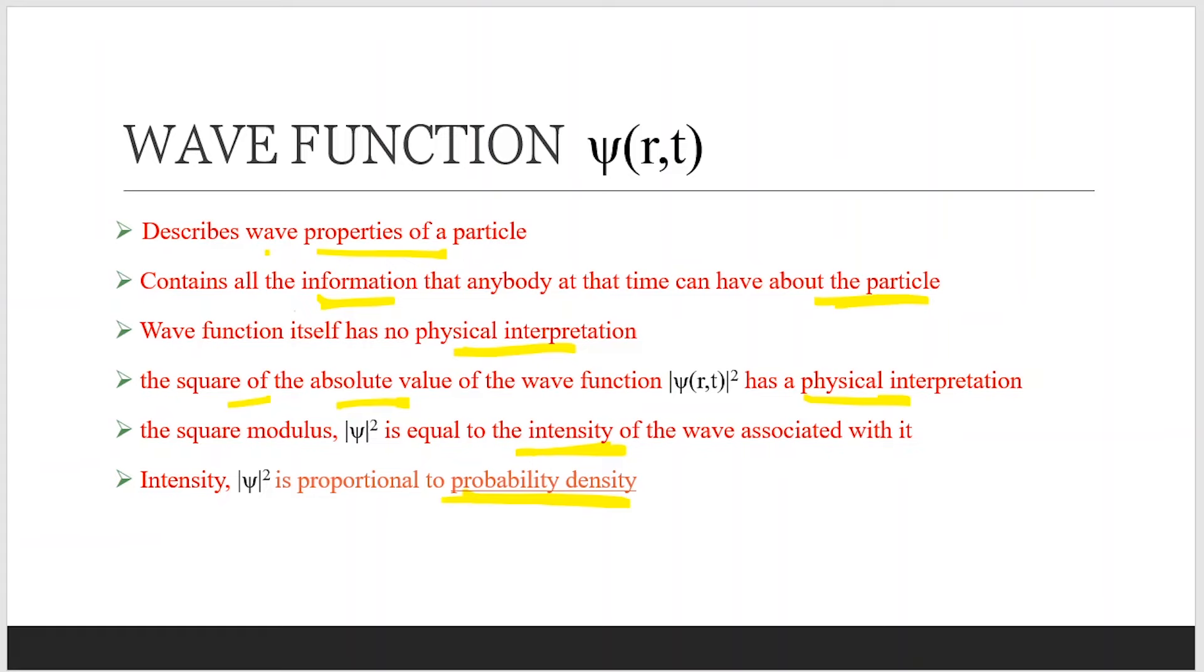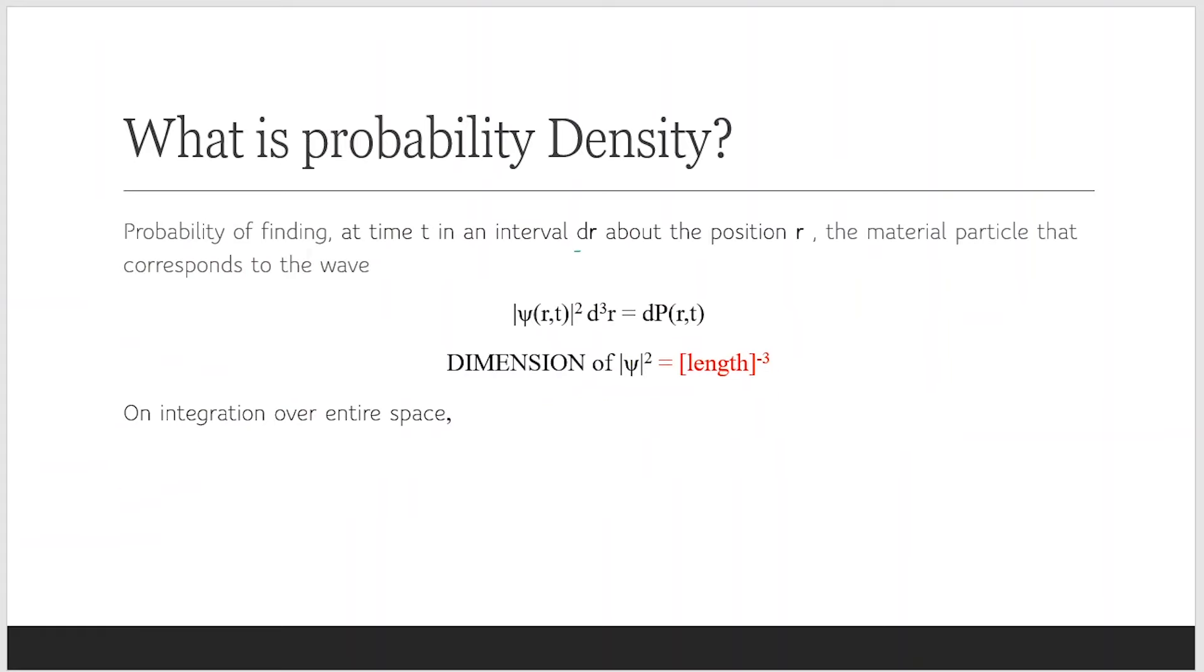Now moving to what is probability density. It is the probability of finding a particle at time t in an interval dr about the position r. Like this is the expression. This is the probability of finding that particle in a d-cubed element in space.